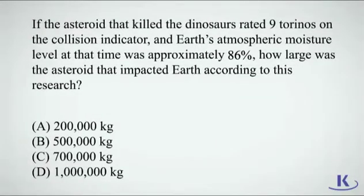If the asteroid that killed the dinosaurs rated 9 torinos on the collision indicator, and Earth's atmospheric moisture level at that time was approximately 86%, how large was the asteroid that impacted Earth according to this research?